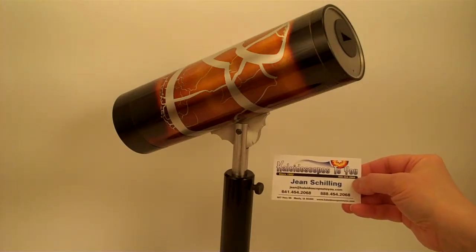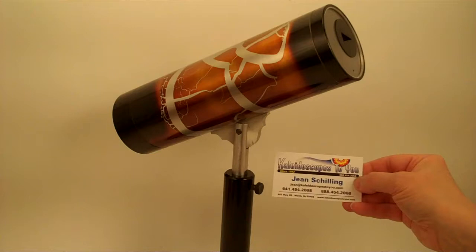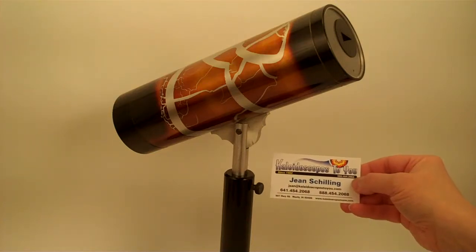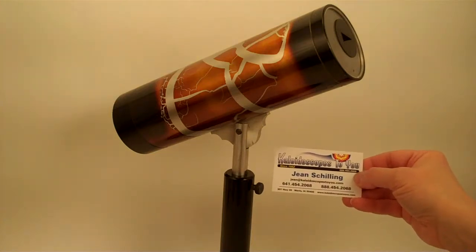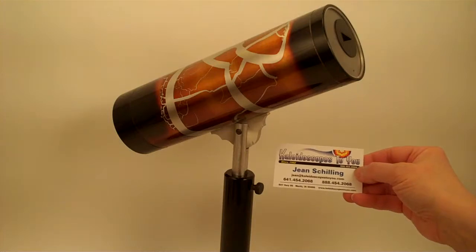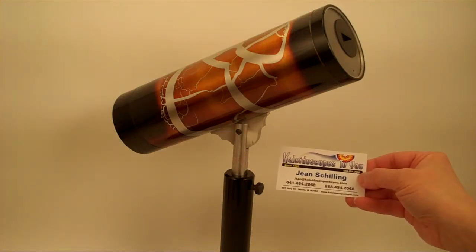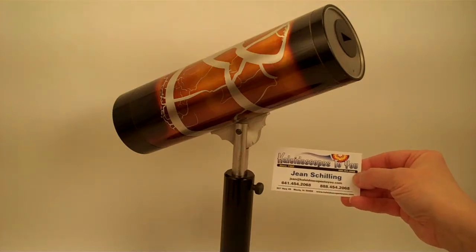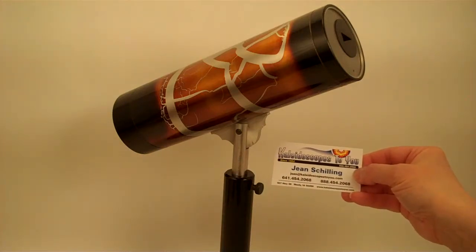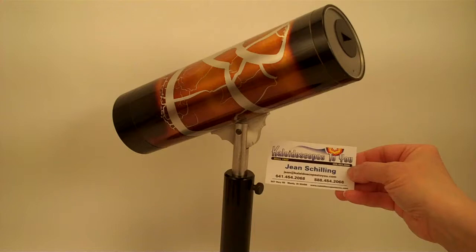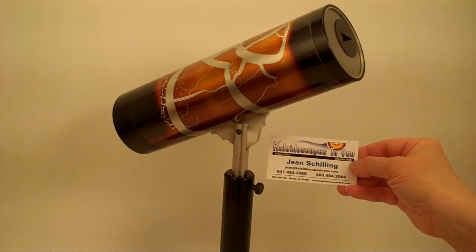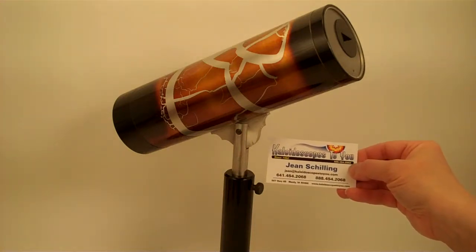This is a Polyangular Alpha Series Parlor Kaleidoscope by Willie and Alice Stevenson. This kaleidoscope was just acquired here at Kaleidoscopes2U and has been in one private collection since it was new. We just acquired it from that original private collection.